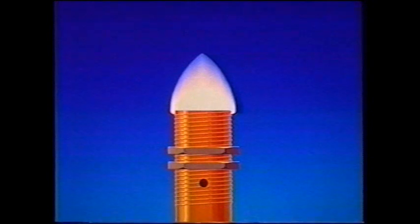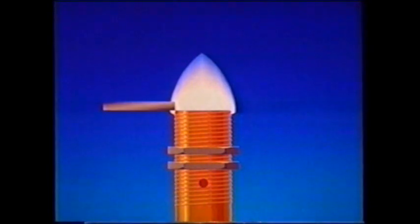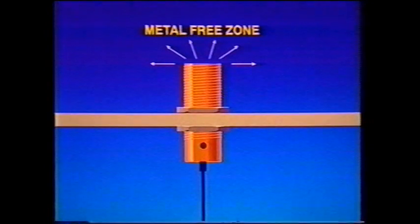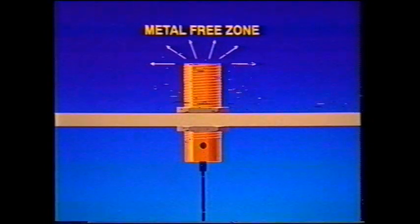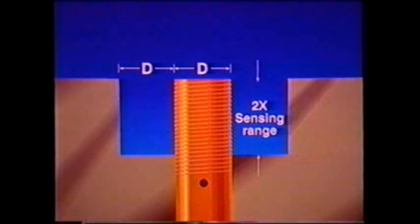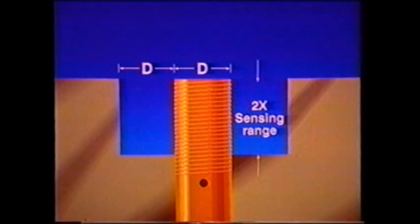The terms flush and non-flush refer to the mounting of the switch. A non-flush switch can detect a target which is not actually in front of the switch. The non-flush switch will also side-sense any bracket or other metal surrounding the tip of the switch. So non-flush switches must have a metal-free zone surrounding their active face. Cylindrical models must have a metal-free zone equal to the diameter of the switch surrounding the circumference. And there should be no metal behind the active face for a distance of twice the sensing range. For rectangular configurations, if there is metal on one side, it should be kept at a distance of 1.5 times the width of the active face.